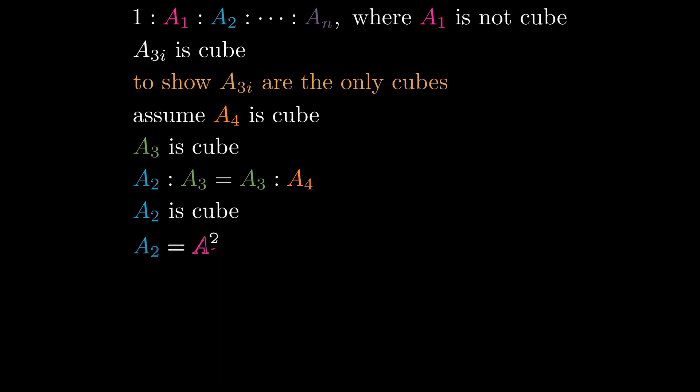Since A2 is equal to A1 squared and A2 is cube, A1 is cube, which is a contradiction. So A4 is not cube.